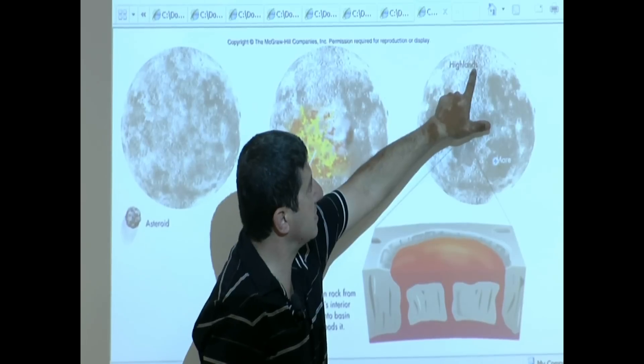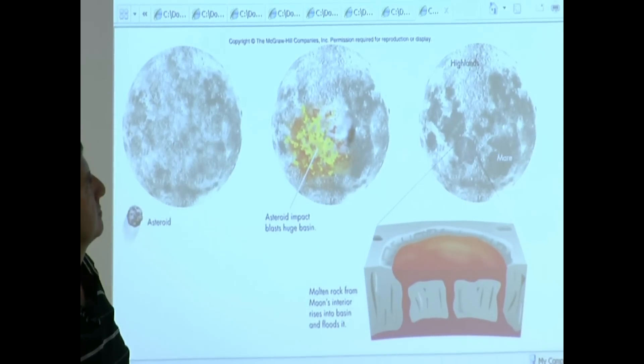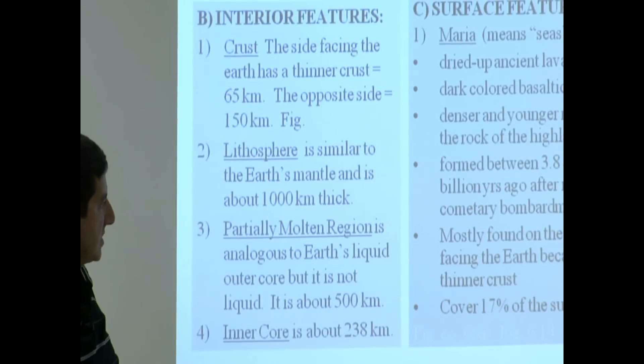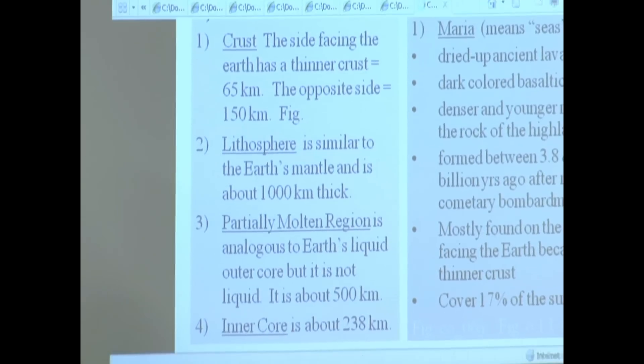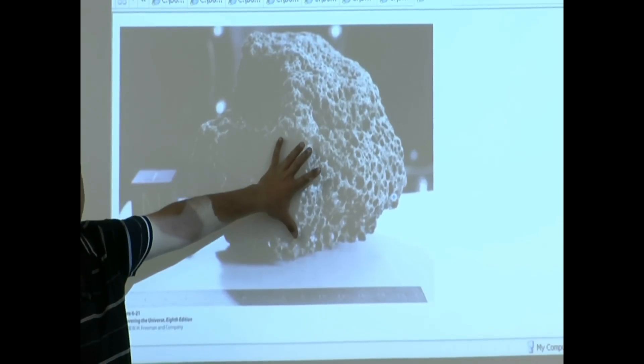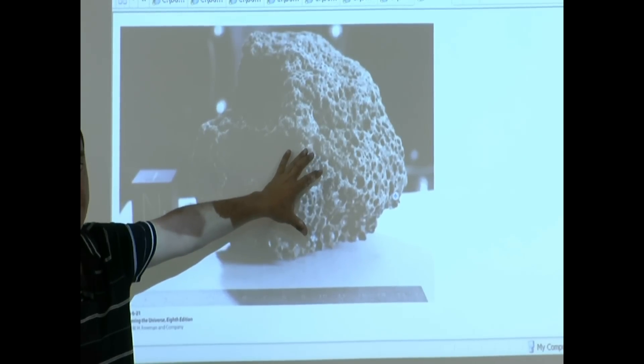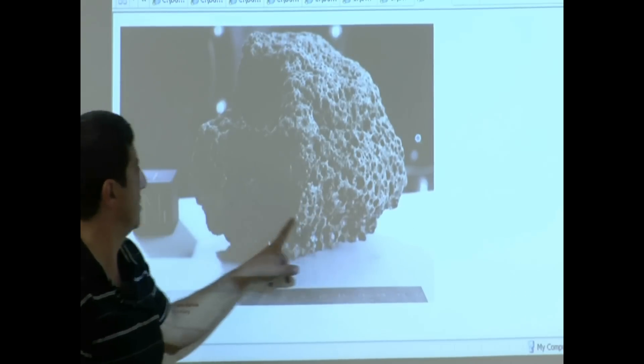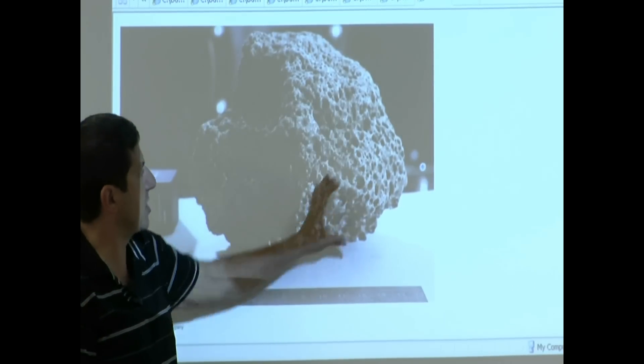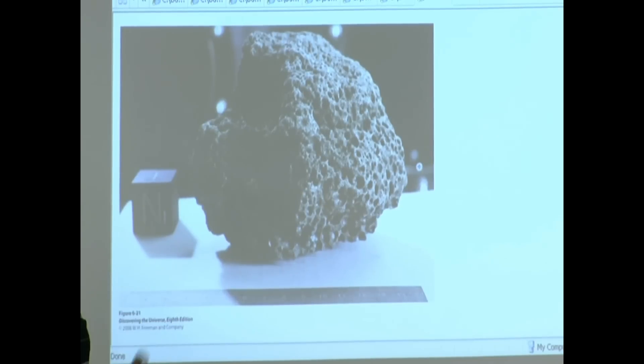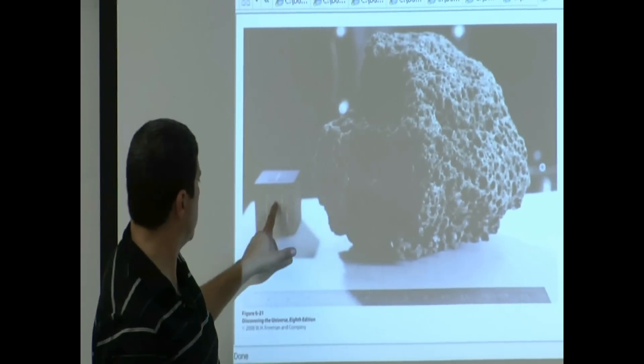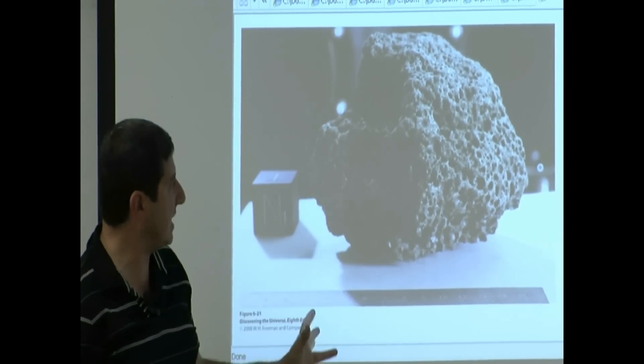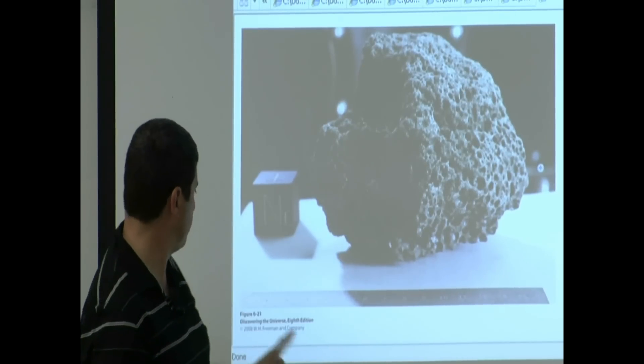The other ones are called highlands, whatever is not a mare. And I think this last picture shows you an actual rock that they brought back from the Apollo missions. This is a rock from the mare. You see how it's dark? It's basaltic. It looks like one of the rocks you get from the ocean. And here they are weighing it and finding out its properties, its density, its age.